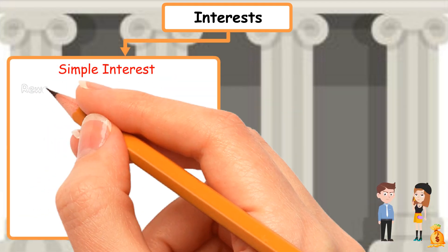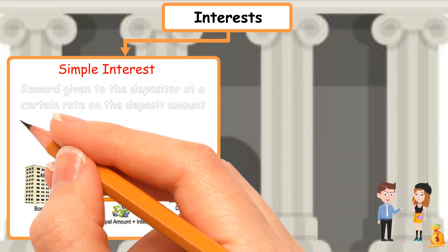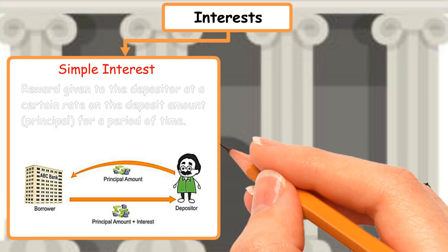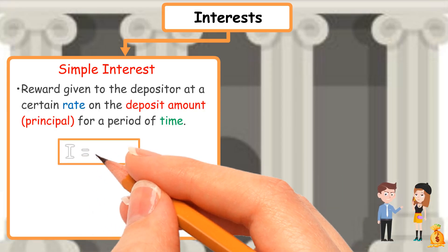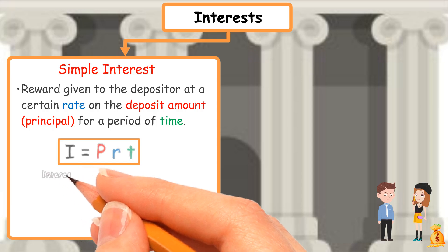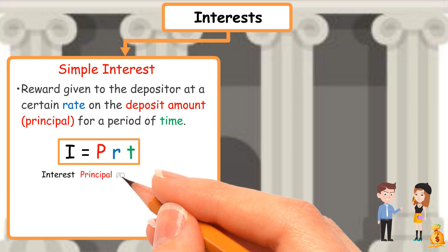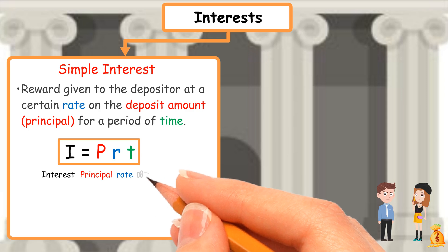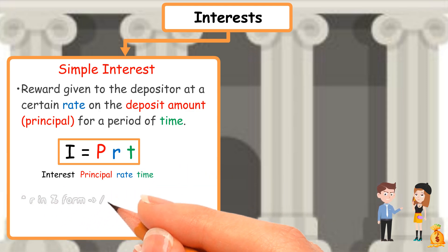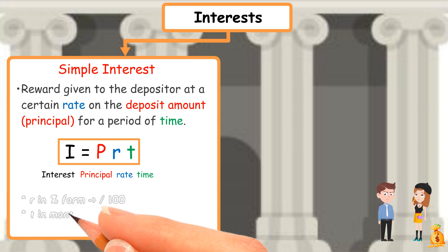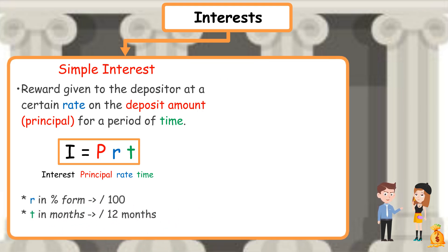Simple interest is a reward given to the depositor at a certain rate on the deposit amount (principal) for a period of time. The formula is I equals PRT, where I is interest, P is principal, R is rate, and T is time. Take note: if the rate is given in percentage form, divide it by 100. If time is given in months, divide by 12 months.